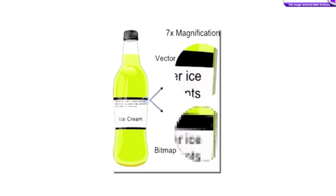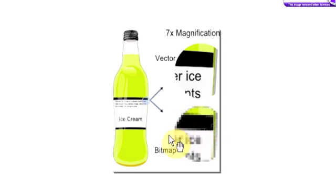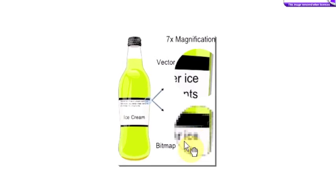So you can see what I actually mean by that. Here's an example of a bottle of ice cream — which is very strange, but there we go. Down here you can see the bitmap which has been magnified seven times of the writing on the bottle. And in fact you can't read it because it is completely blurred and pixelated.